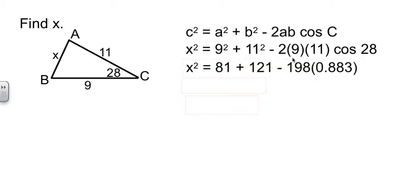Doing some arithmetic. Cosine of 28 is 0.883 according to my calculator. Combining that in my calculator and then taking the square root, I find out that that side over there is 5.212.